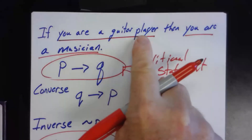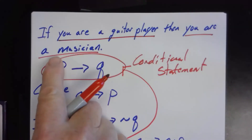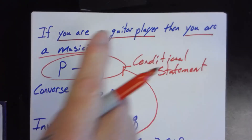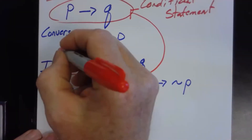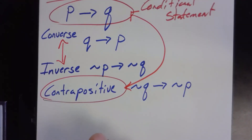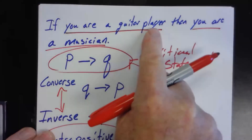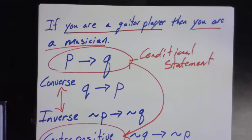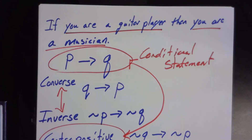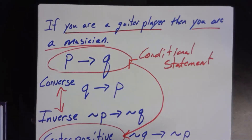Think about this: 'if you're a guitar player, then you are a musician' — and 'if you are not a musician, you are not a guitar player.' They say the same thing. The original statement and the contrapositive are always both true or both false. Similarly, the converse and inverse are either both true or both false — because they also really say the same thing. Is it possible all four are true? Yes.